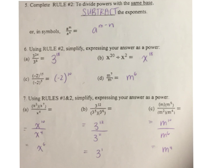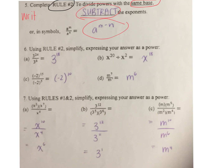Rule number 2: when dividing powers with the same base. Rule 1 was multiplying powers; the opposite of multiplication is division, and the opposite of addition is subtraction. Write the base, and then subtract the exponents. So if the base is the same, we write the base and then subtract. 24 take away 6 is 18.